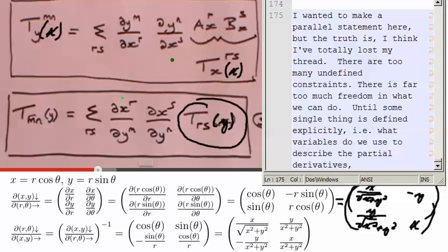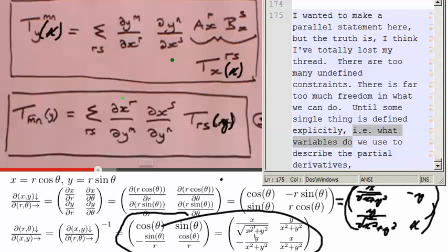Well, I wanted to make a parallel statement here, but the truth is, I've totally lost my thread. Unless we, there are just too many undefined constraints. There is far too much freedom in what we can do, until some single thing is defined explicitly, i.e., what variables do we use to describe the partial derivatives, because, you know, either one of these, del y del x, can be expressed in this way, either of these two ways, and del x del y can be expressed in either of those two ways.